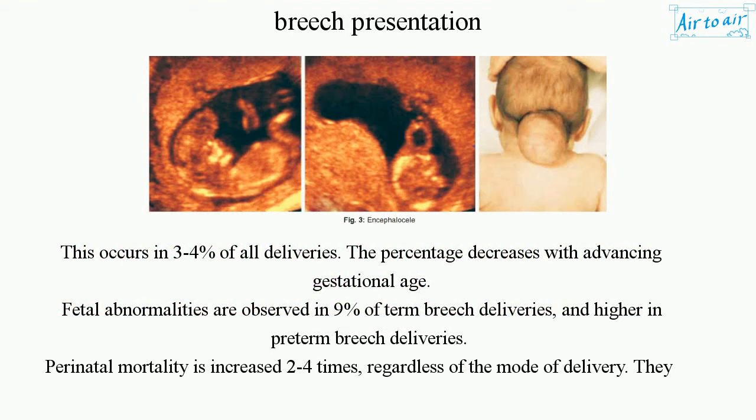Breech presentation occurs in 3-4% of all deliveries, and the percentage decreases with advancing gestational age. Fetal abnormalities are observed in 9% of term breech deliveries, and are higher in preterm breech deliveries.